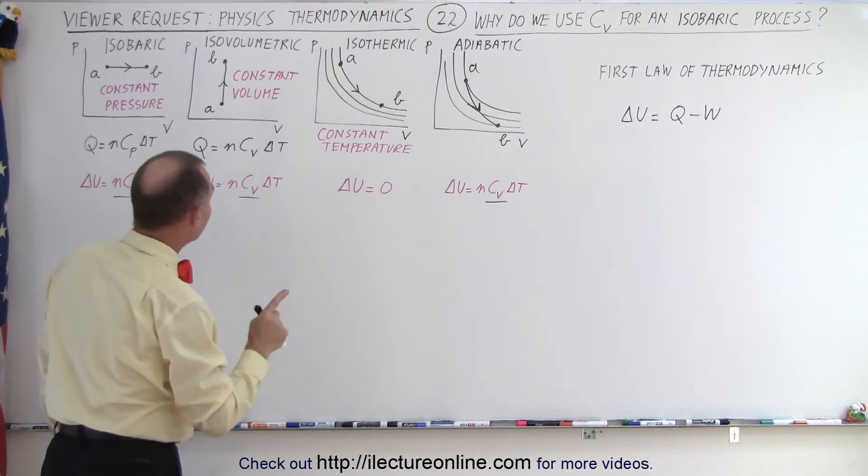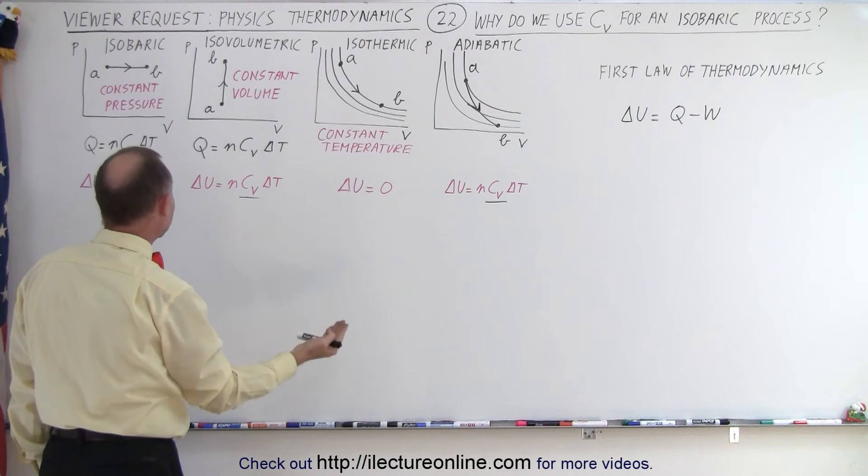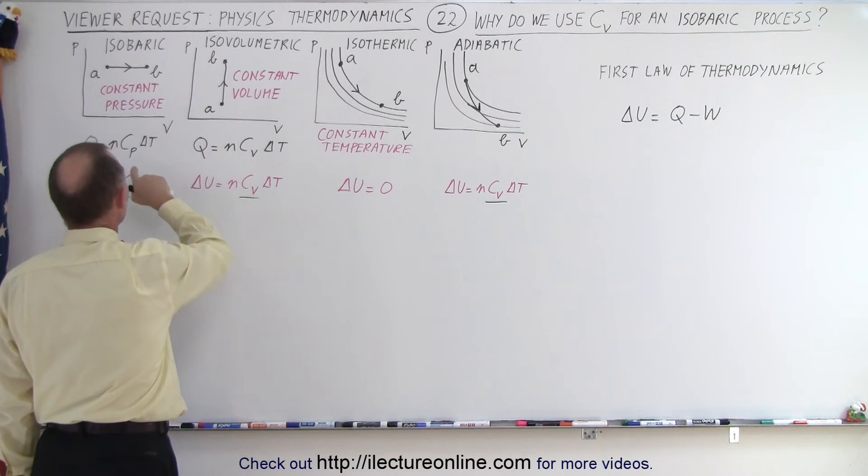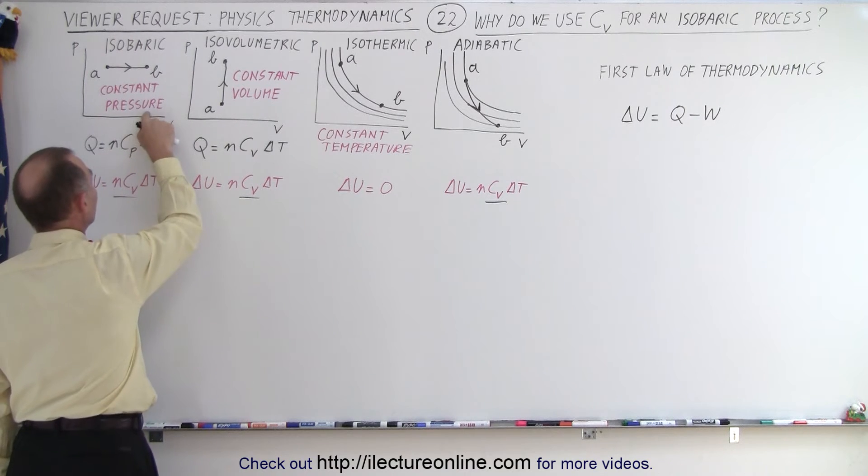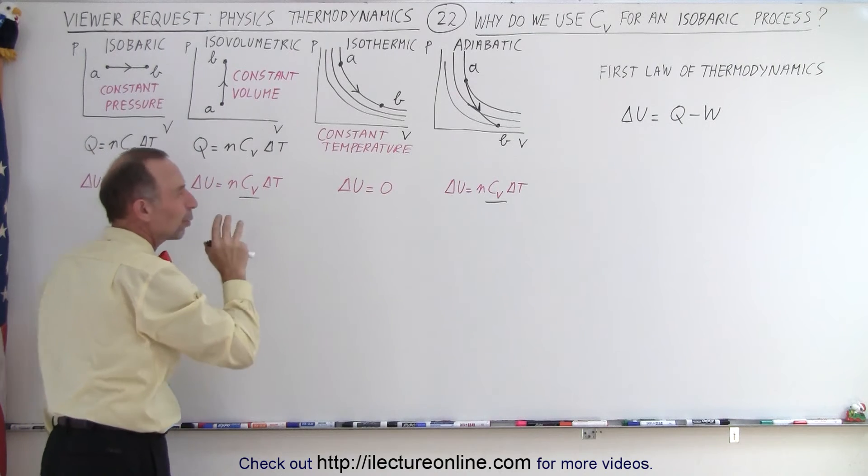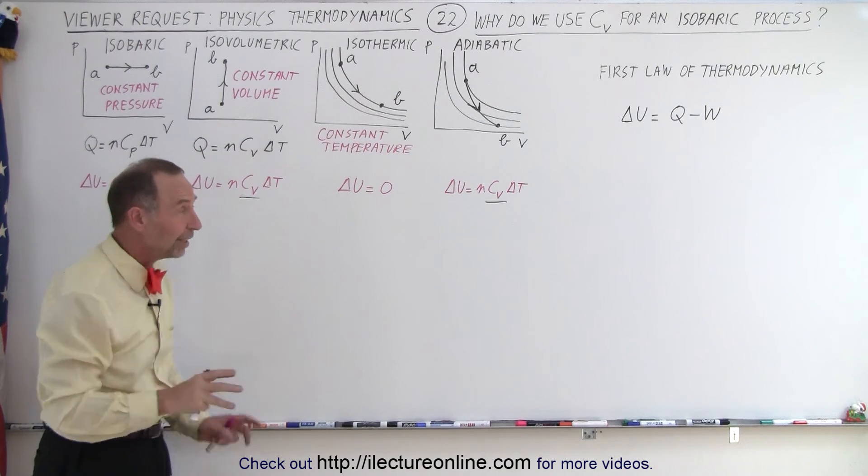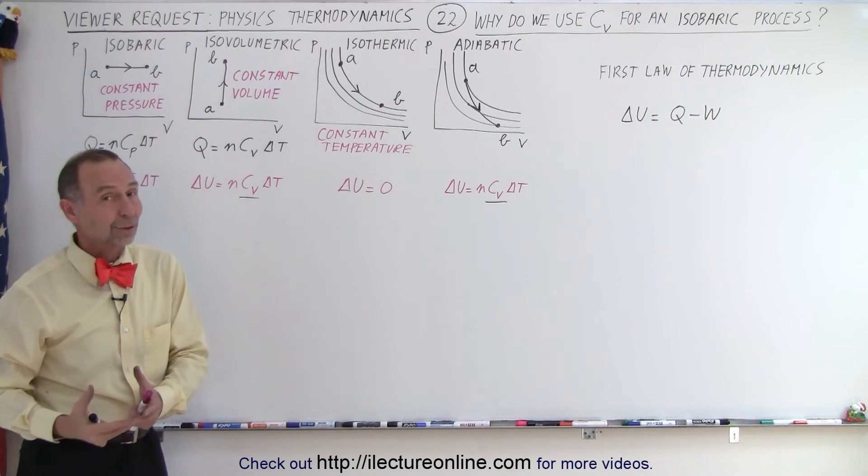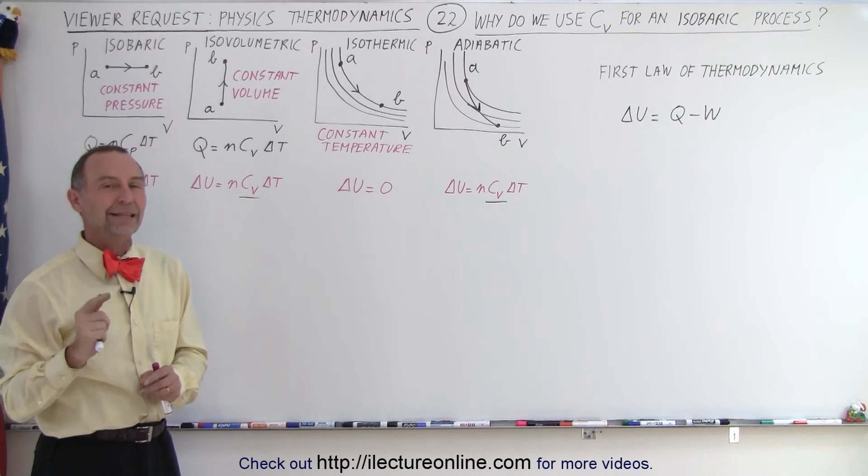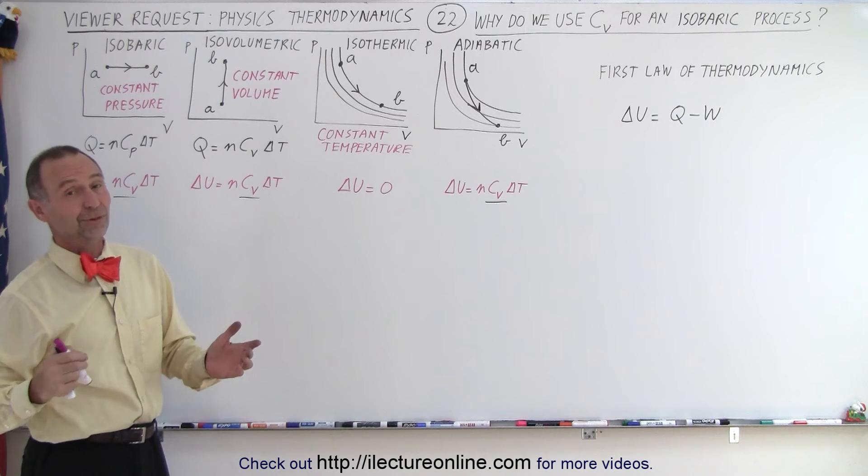But when we're trying to calculate the heat added or the heat taken away from a process, then we use C sub P for a constant pressure process and C sub V for a constant volume process. And so that is what confuses students. So hopefully with this video and answer that question from our viewers, we have it all straightened out. And that is how it's done when it comes to thermodynamics.